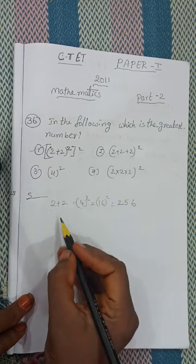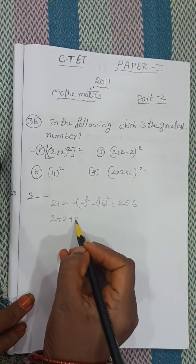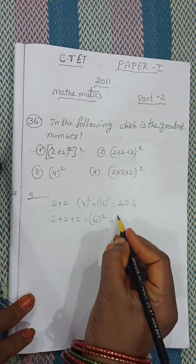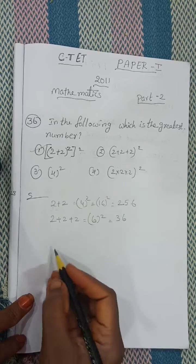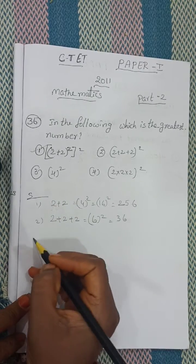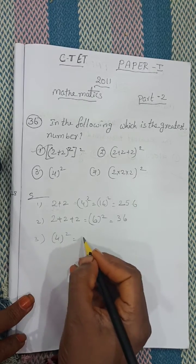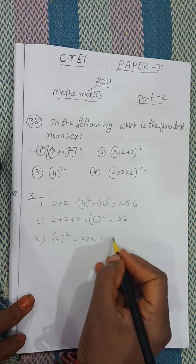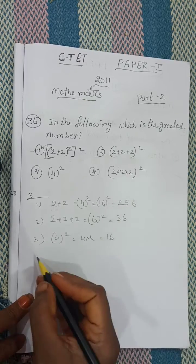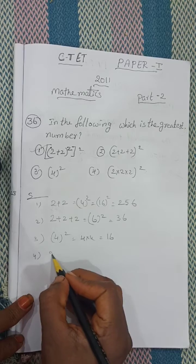Second one: 2 plus 2 plus 2 equals 6, whole square — 36. Third one: 4 squared, that means 4 into 4 — how much? 16.